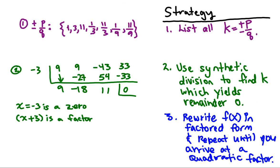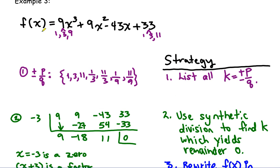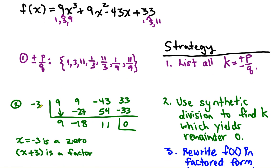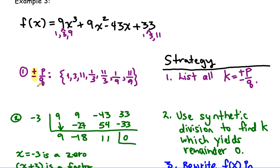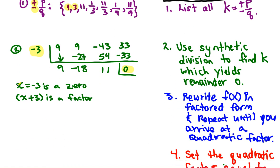Now I start going through the list with synthetic division — you can also just plug values into the polynomial to see if you get zero, but synthetic division is just as easy and gives you the coefficients for the next factor. Try them in order, both positive and negative. I tried positive 1 — didn't work. Negative 1 — didn't work. Positive 3 — didn't work. Negative 3 gave a remainder of zero. So x equals negative 3 is a zero of the function, meaning there's an x-intercept at negative 3, and x plus 3 is a factor.